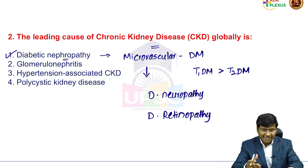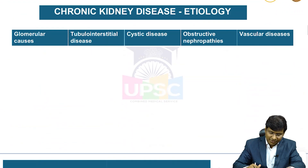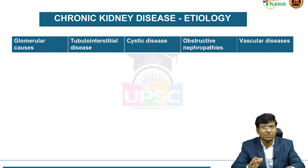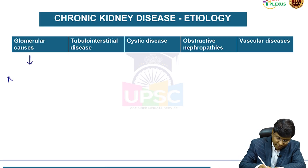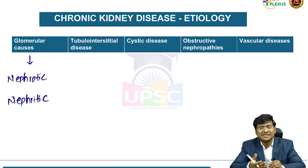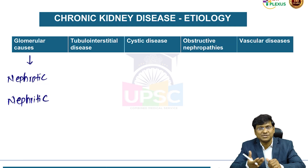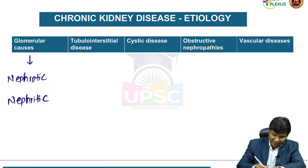Other microvascular complications in diabetes mellitus include diabetic neuropathy and diabetic retinopathy. The etiologies causing CKD include glomerular causes — nephrotic and nephritic syndrome. In nephrotic syndrome, the most common systemic disease is diabetes mellitus. Infections such as HIV and HCV also contribute to glomerular disease.